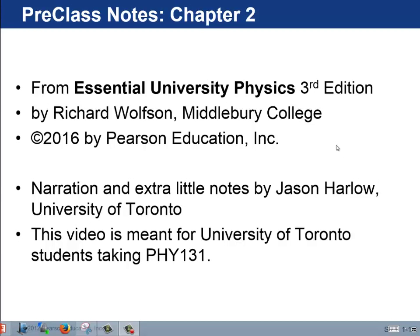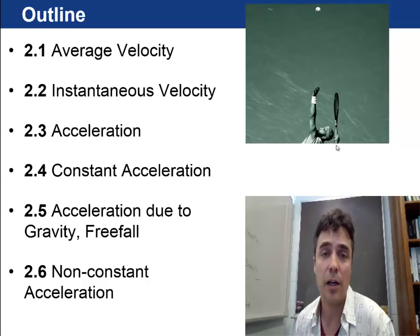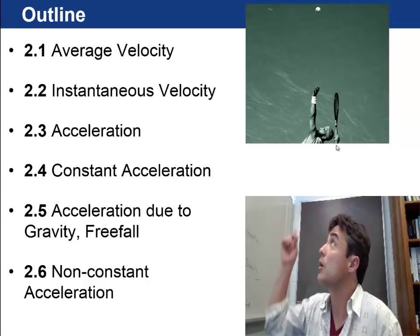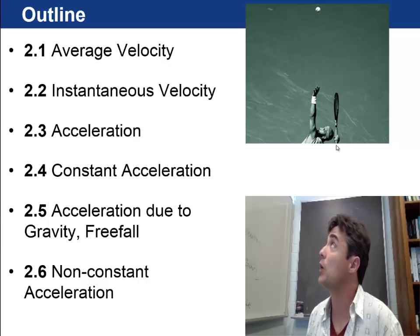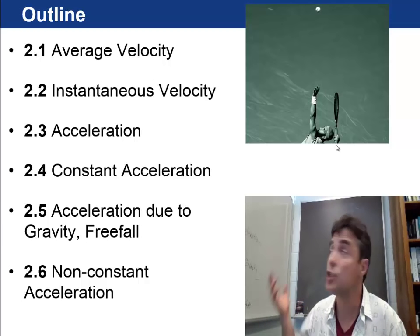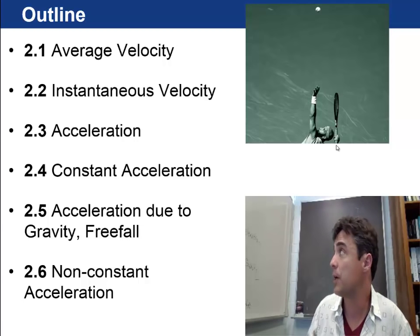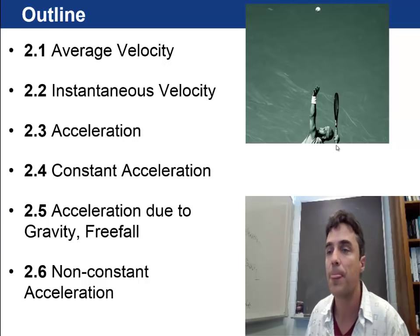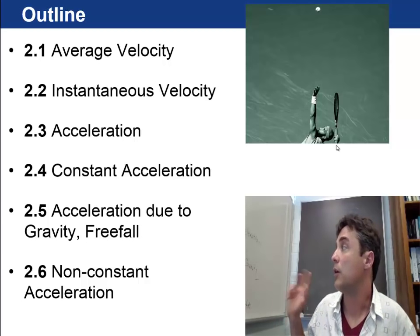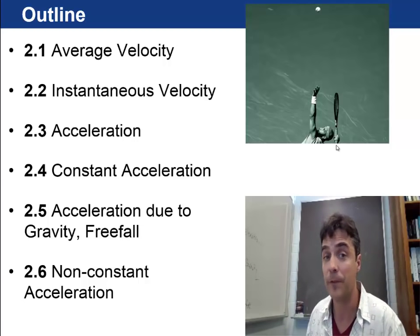Hi there, my name is Jason Harlow. Welcome to the pre-class video for Essential University Physics, Chapter 2. Here is an outline of today's video. We start off with Section 2.1 on average velocity, then instantaneous velocity. The rate of change of instantaneous velocity is called acceleration. We'll talk about constant acceleration and the equations of constant acceleration, which are important. A good example of constant acceleration is the acceleration of gravity, also called freefall.